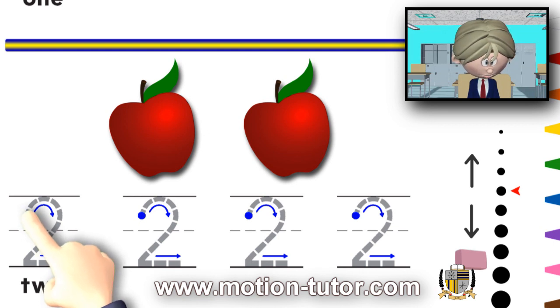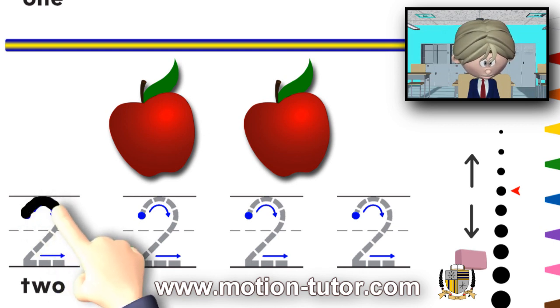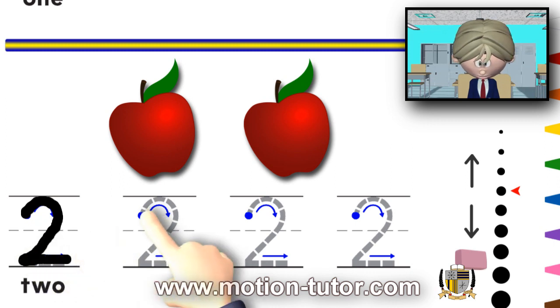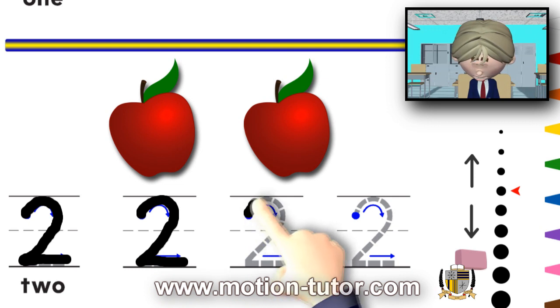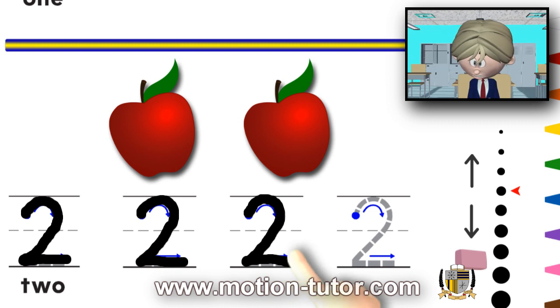Start from over here. And then you just go around like that. And then come over here like that. We'll try it again. Go around. Come down here. And then come across. Go around. Come down. Go across.